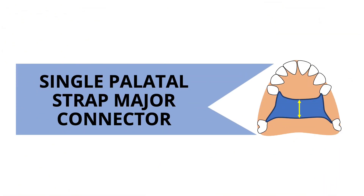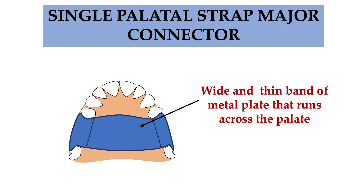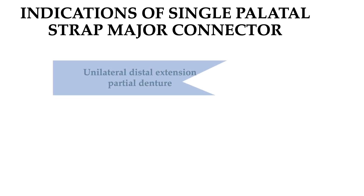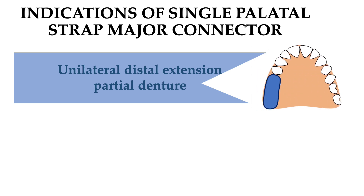The second connector is the single palatal strap major connector. As the name suggests, it has a wide, thin band of metal plate that runs across the palate, overcoming the disadvantages of the bar. This strap should be at least 8 mm wide. It is indicated in unilateral distal extension partial denture cases — Kennedy's Class II and Class III — not in bilateral edentulous areas such as Class I.